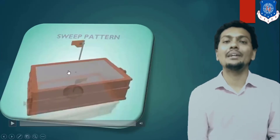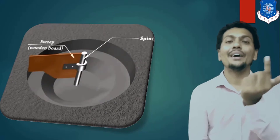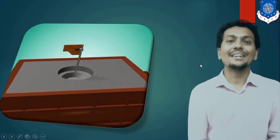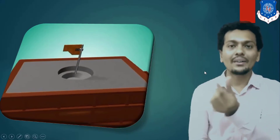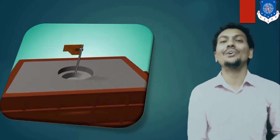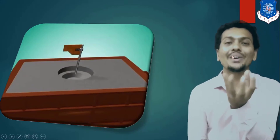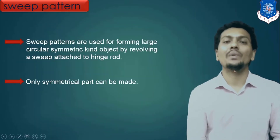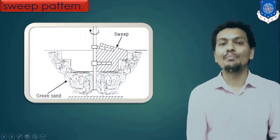After skeleton pattern, here I mentioned the sweep pattern. By revolving a simple small part around the hinge point, you can make the whole symmetrical cavity, and it is known as a sweep pattern. If you want to make a symmetrical cavity, you can revolve one small part around the hinge point and your final cavity will be ready. You will not require the whole solid pattern — just by revolution you can make the cavity.